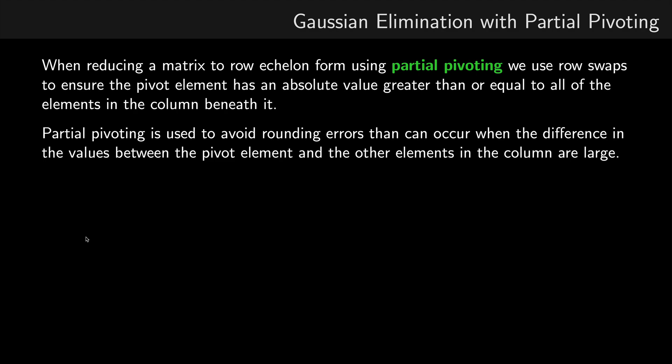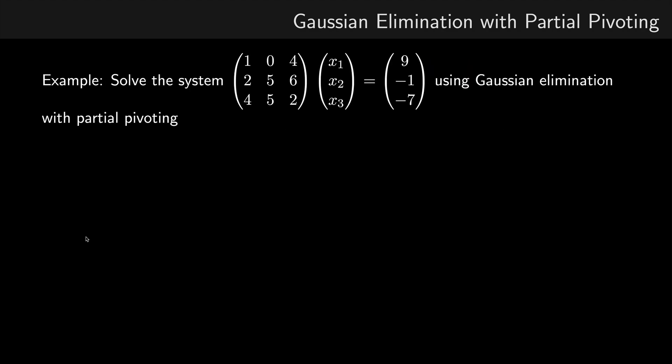Okay, so I'll show this by means of an example. So we're going to solve this system of linear equations using Gaussian elimination with partial pivoting. So we start by forming the augmented matrix.